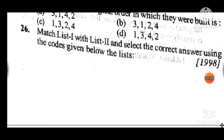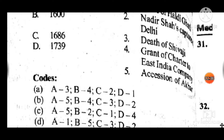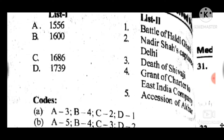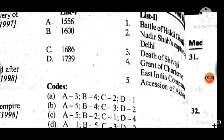Question 26: Match list 1 with list 2. Answer to question 26 is B. A relates to 1556 — accession of Akbar; B relates to the 5th grant of charter to the East India Company; C relates to death of Shivaji in 1686; D relates to 1739 — Nadir Shah's capture of Delhi.